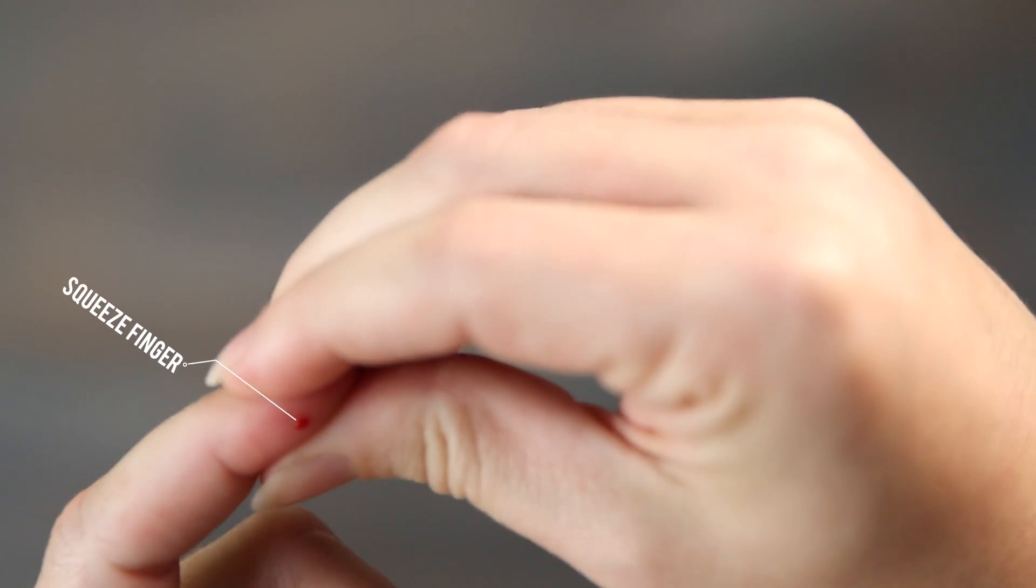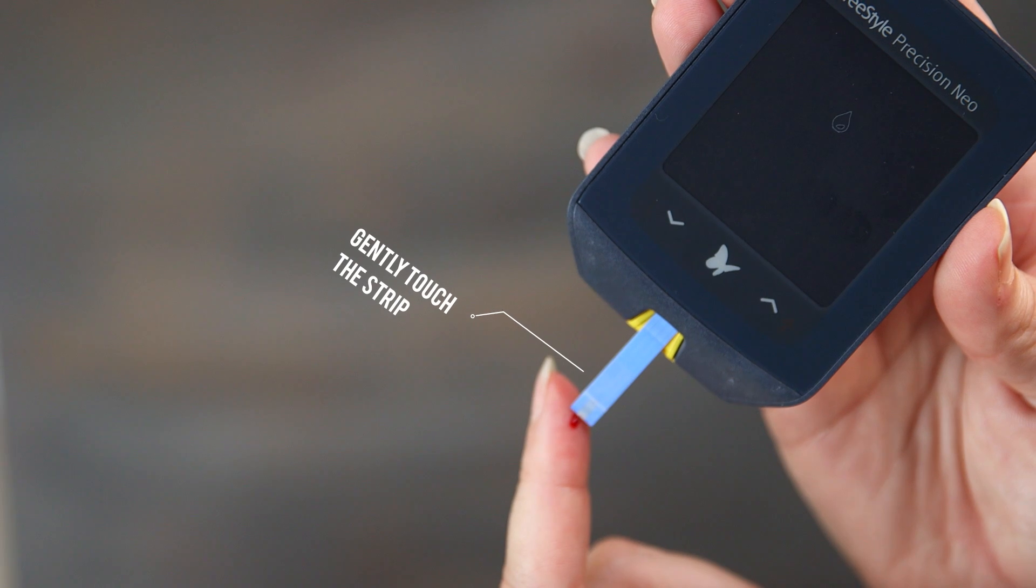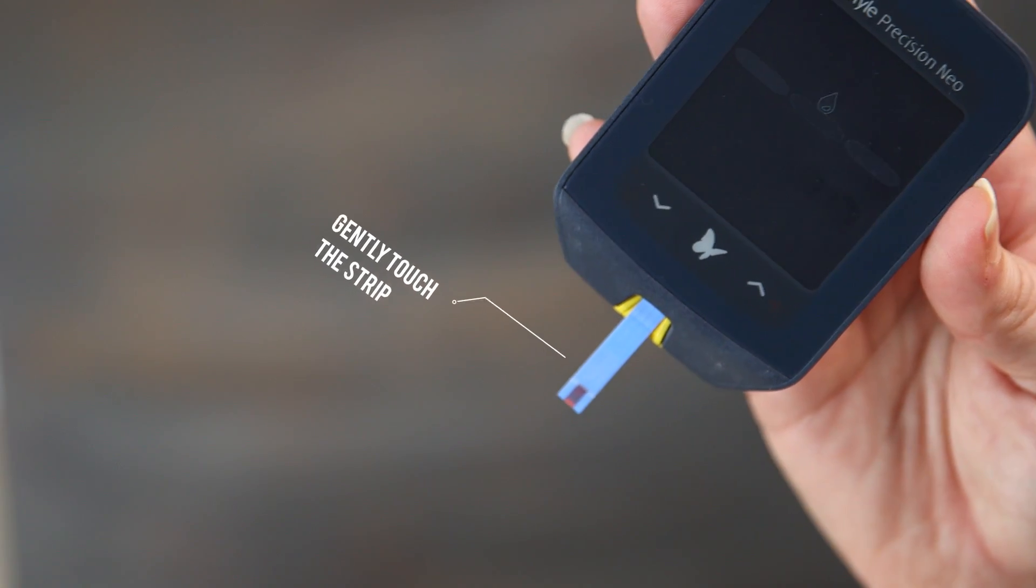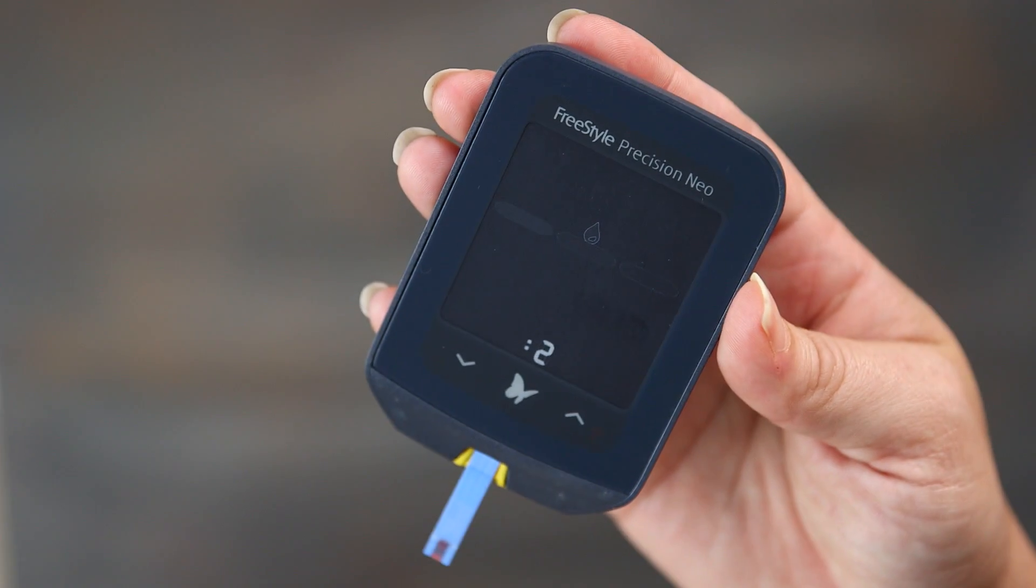Squeeze your finger just a little to get a drop of blood. Gently touch the strip. It'll pick up the blood and let the meter show your blood sugar reading.